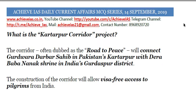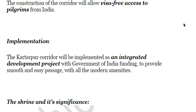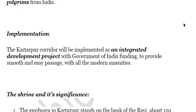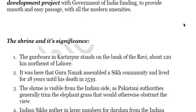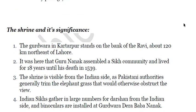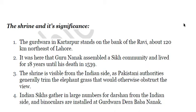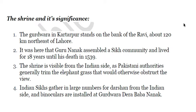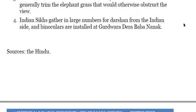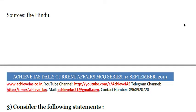The corridor is constructed to allow visa-free access to pilgrims from India, funded by the Government of India to provide smooth and easy passage with modern amenities. The shrine stands on the bank of River Ravi, 120 km northeast of Lahore. It was here that Guru Nanak assembled a Sikh community and lived for 18 years until his death in 1539. The shrine is visible from the Indian side as Pakistani authorities trim the elephant grass that would otherwise obstruct the view, and binoculars are installed at Gurdwara Dera Baba Nanak.